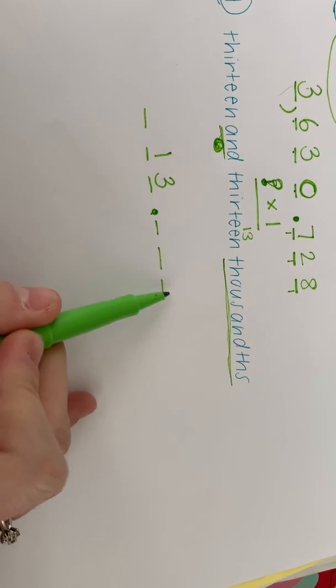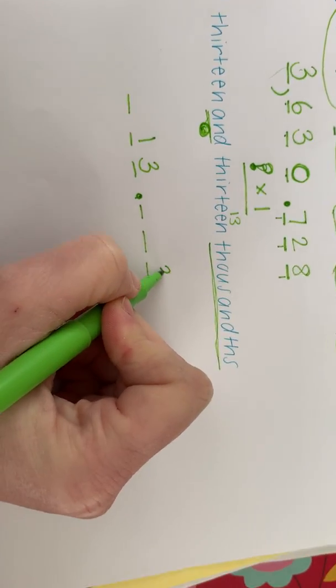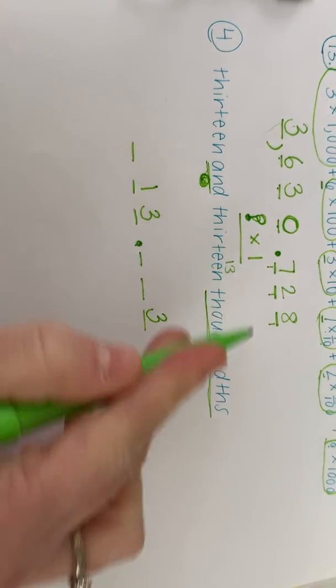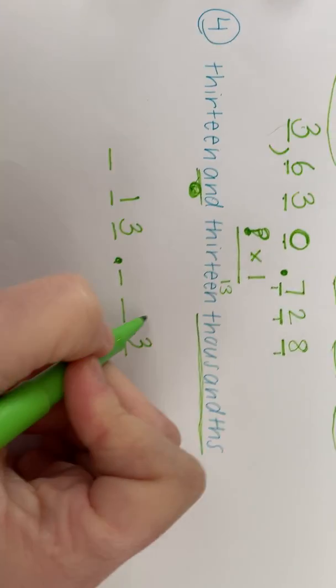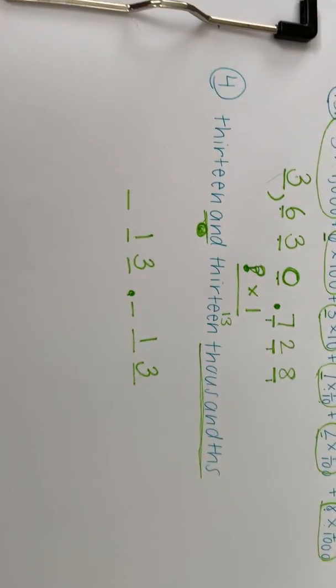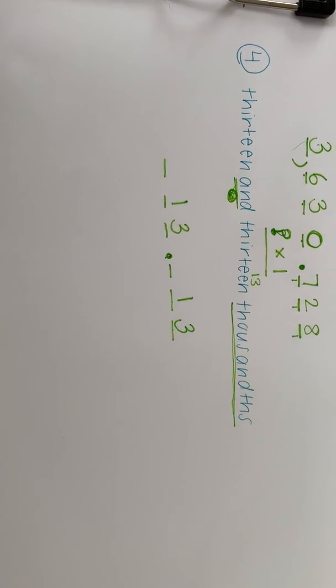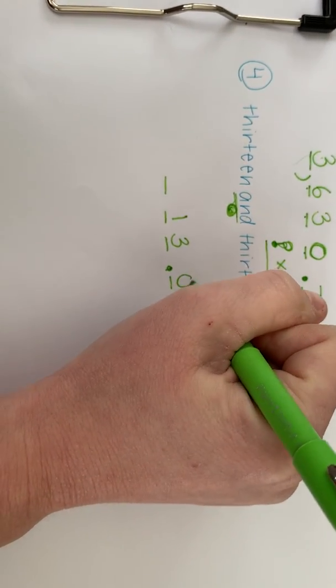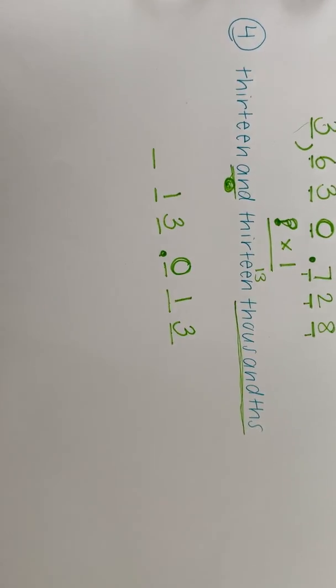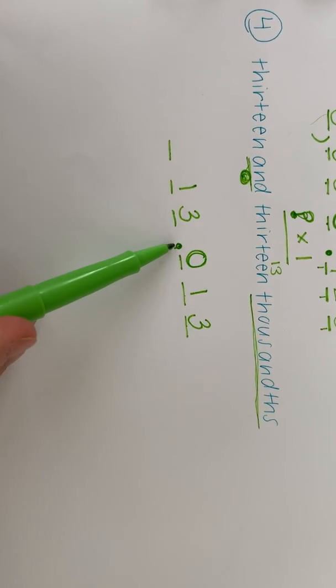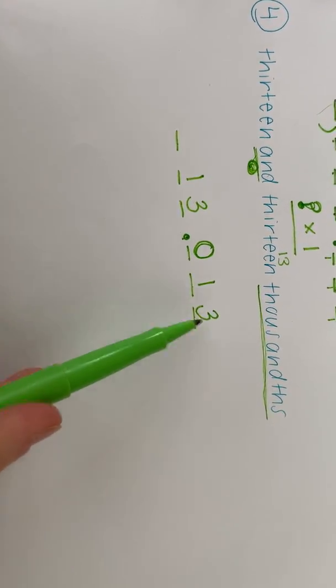So if this is tenths, hundredths, thousandths, our three is going to be here and it's 13 thousandths. So to make it 13, your one's going to have to come right behind in front of it. Now, again, we have a blank place like we did before. So you just put a zero there. So this number in standard form is 13 and 13 thousandths.